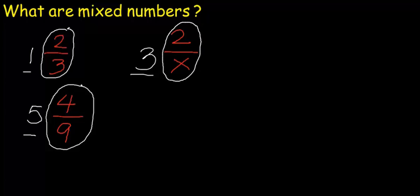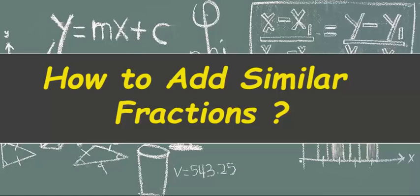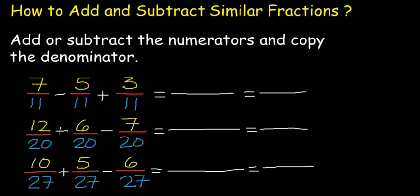How to add similar fractions. To add or subtract similar fractions, first you have to add or subtract the numerators, and second, you copy the denominator. We have here an example: 7 over 11 minus 5 over 11 plus 3 over 11.